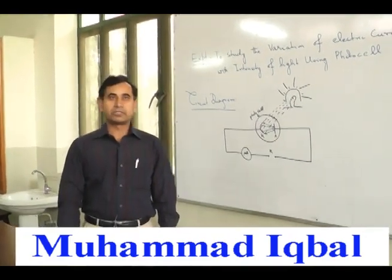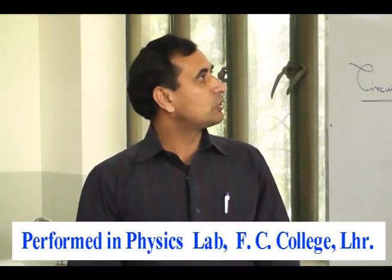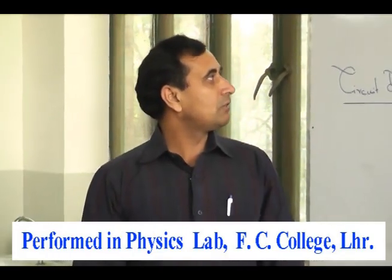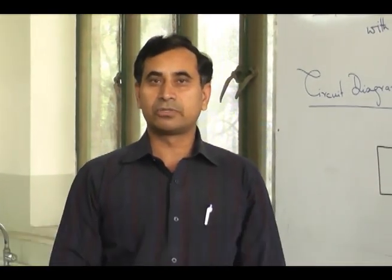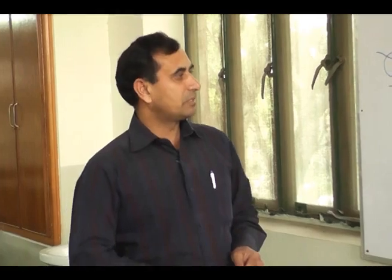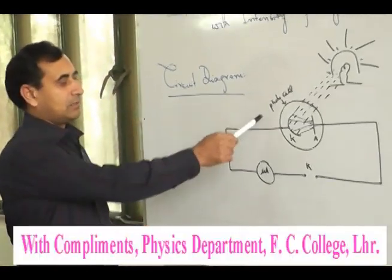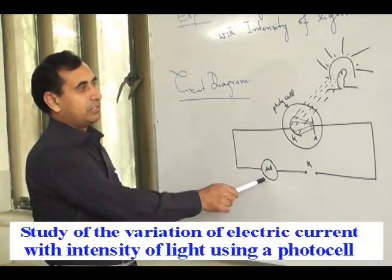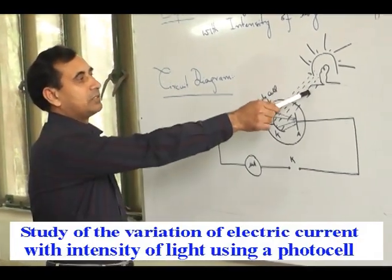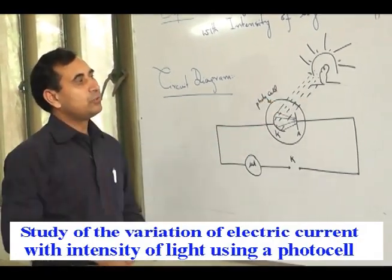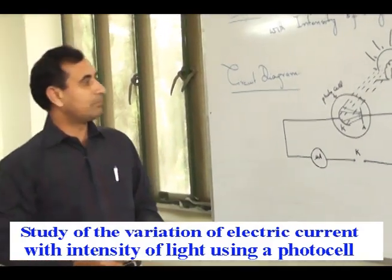Good afternoon students. We are going to perform the experiment to study the variation of electric current with the intensity of light using a photocell today. The apparatus in this experiment is a photocell, microammeter, plug key, and a source of light. Here we will use an electric lamp as the source of light.